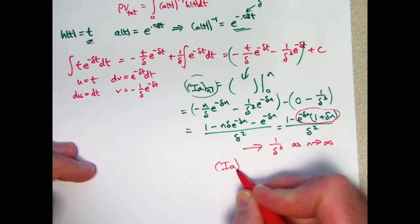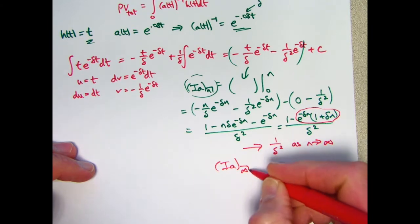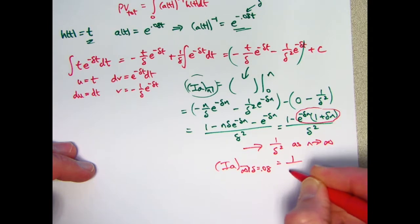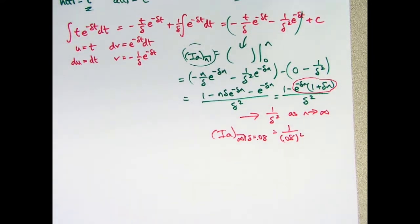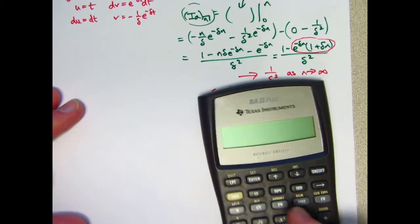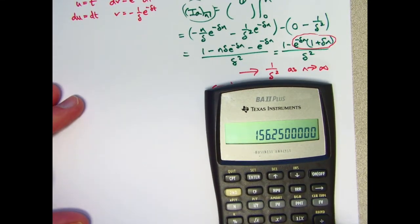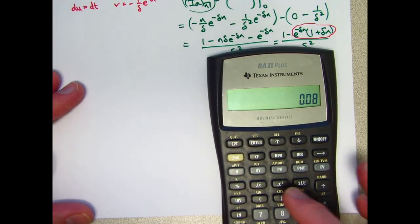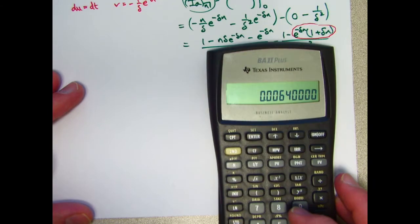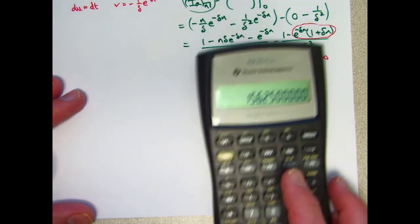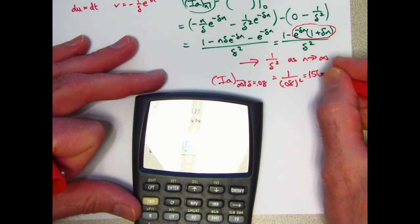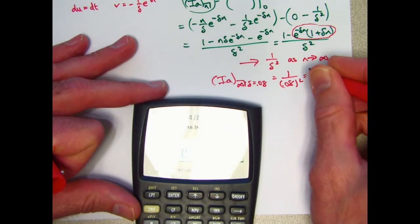i A bar infinity, when delta is 0.08, is going to be 1 over 0.08 quantity squared. Let's go ahead and see what that is, get my calculator. I think that was the answer there. 0.08 squared is this. Take its reciprocal. Yep, 156.25, it looks like on the dot, is what this is. And that is the answer to the question.